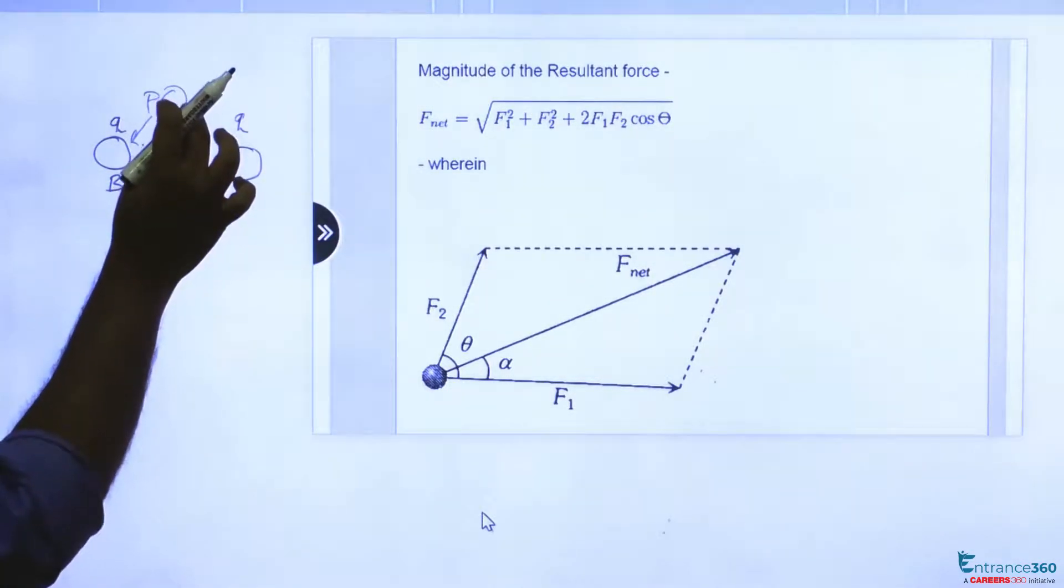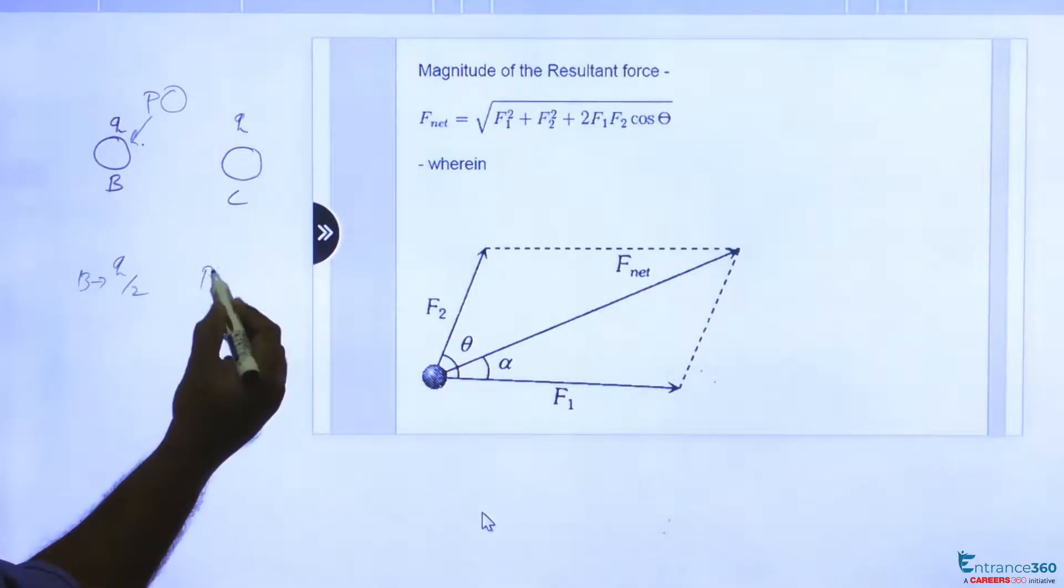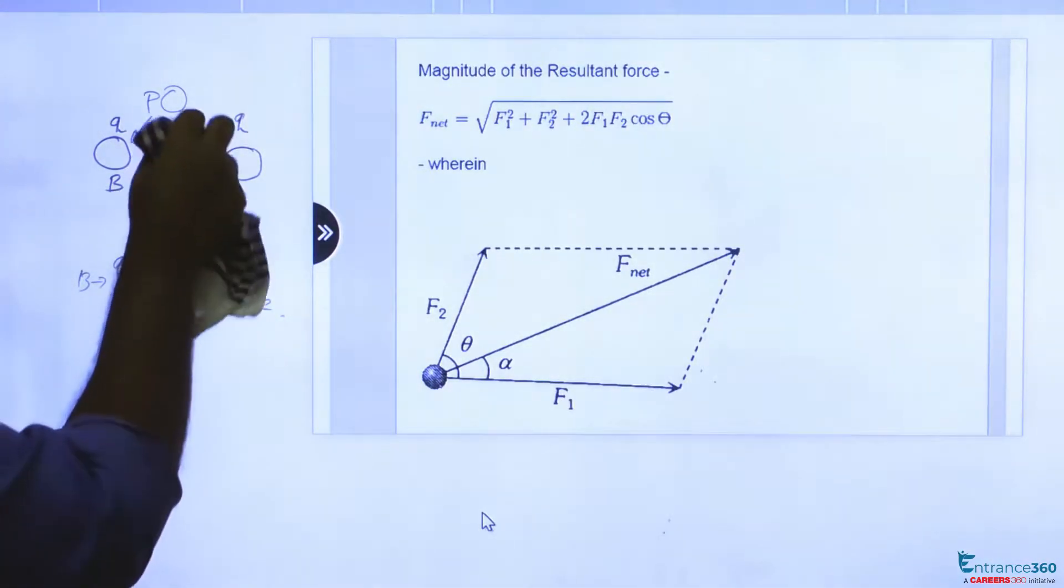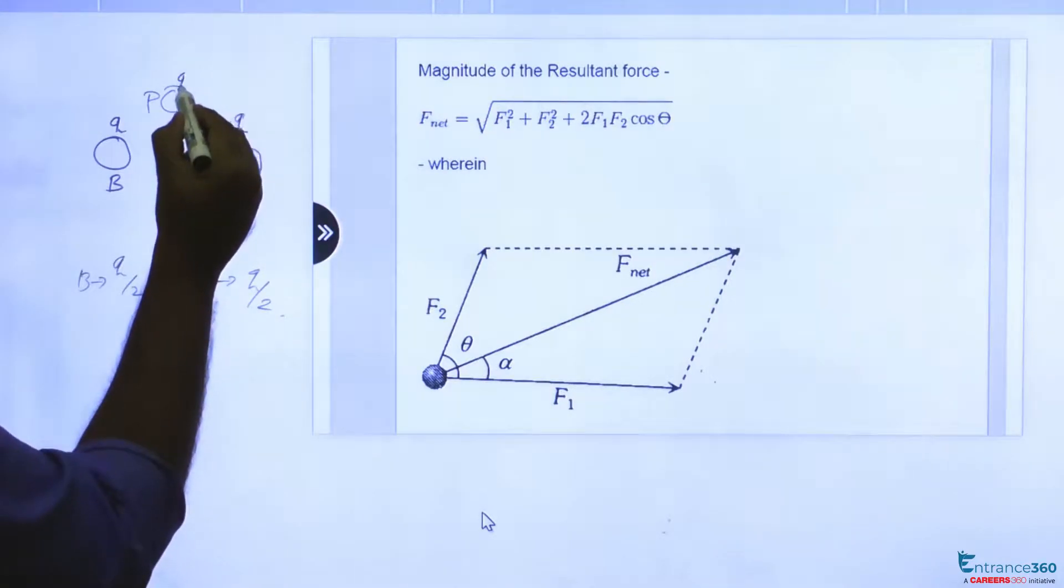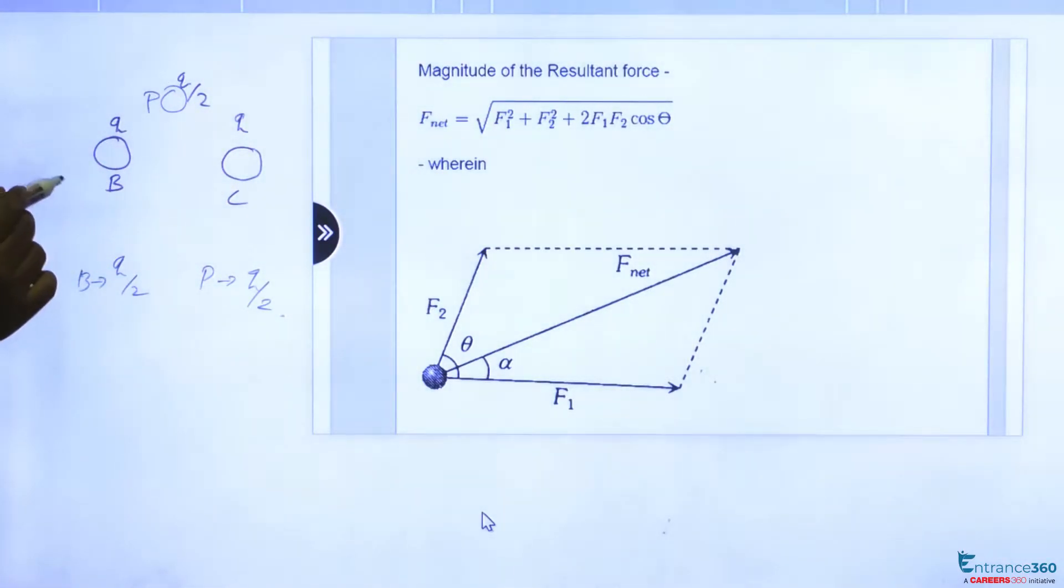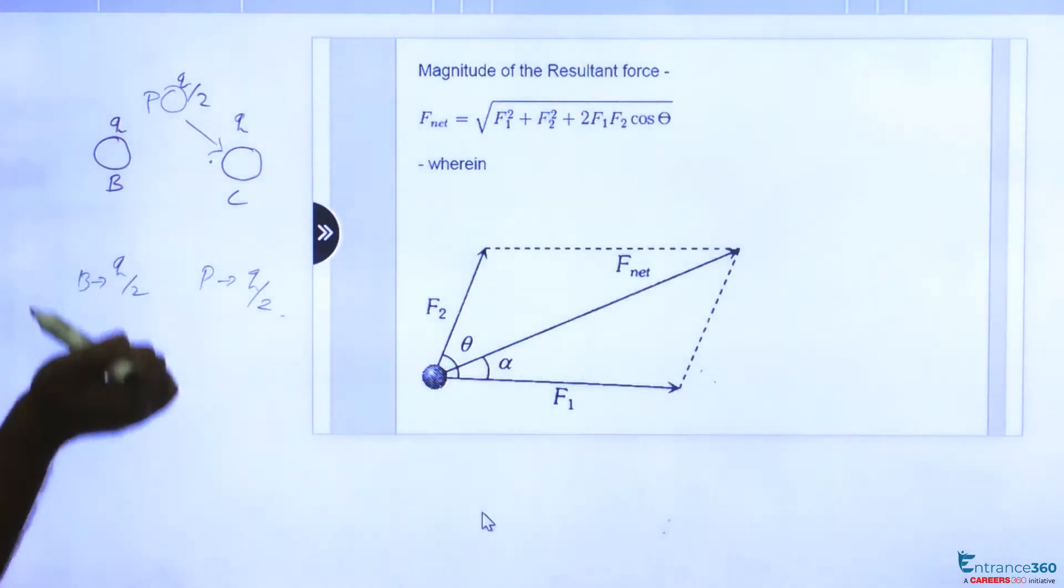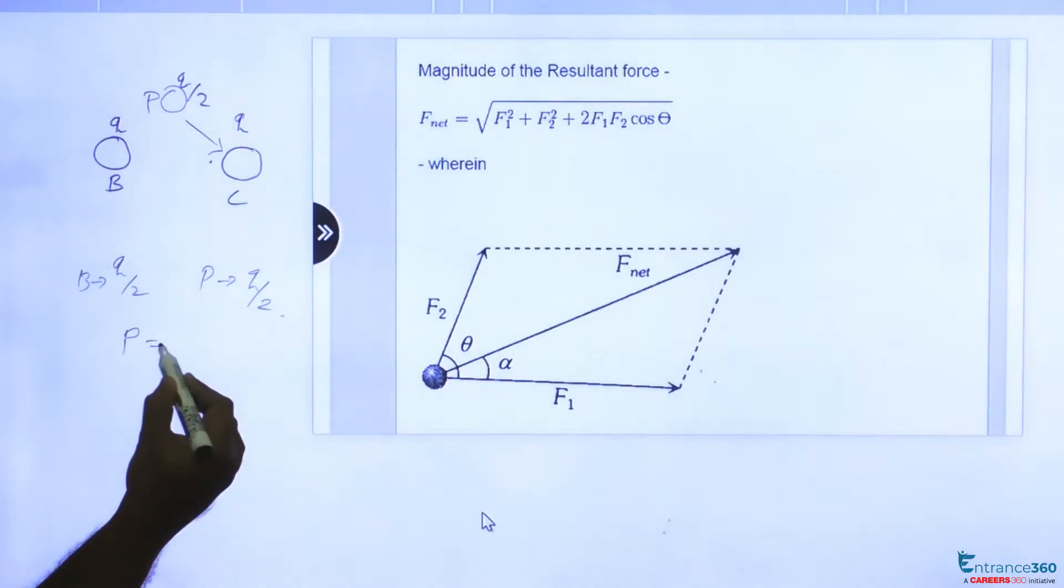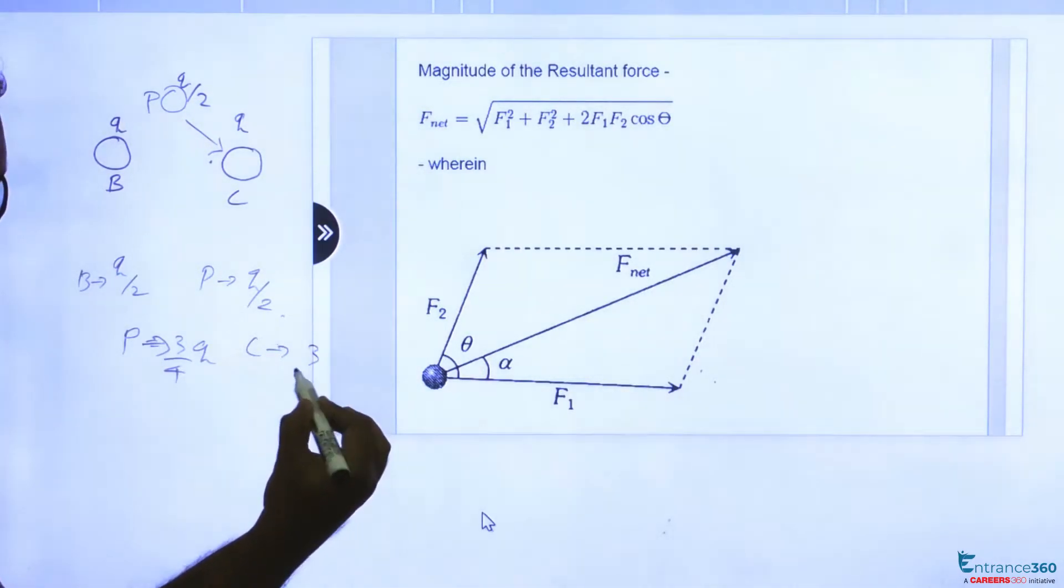When it is brought in contact with B, the charges will be equally distributed over B and P. Now the charge of P is Q by 2. Now body P with charge Q by 2 is made in contact with body C. So total charge is 1.5Q. So charge will get distributed between P and C as 0.75Q, and charge of C is also 0.75Q.